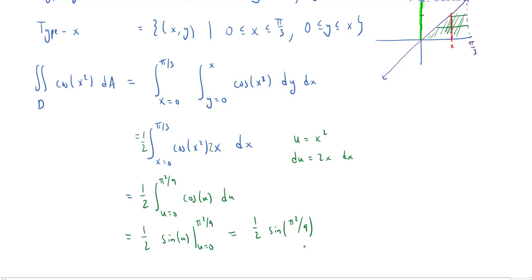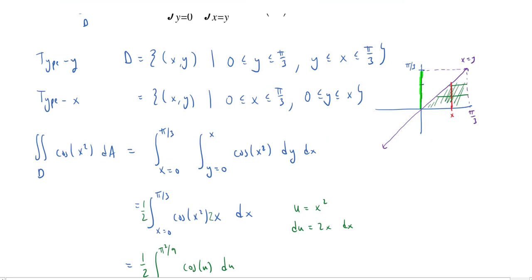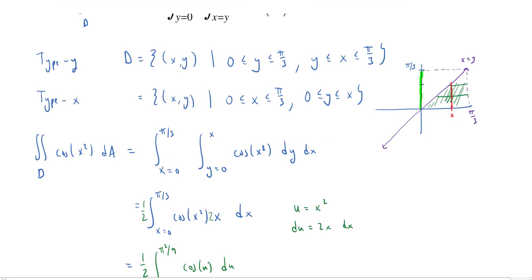So this is the magic of Fubini's theorem. You have an original integral where you just have no hope, because there's no elementary anti-derivative. You switch the order of integration, at the cost of having to draw a picture, and interpret it. And all of a sudden, we just get this pretty simple answer. Love it.